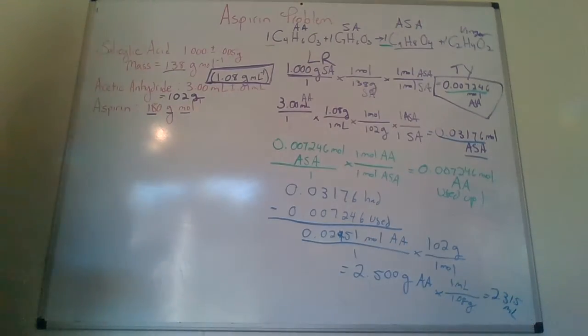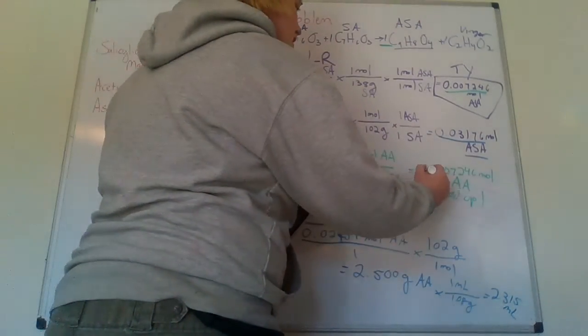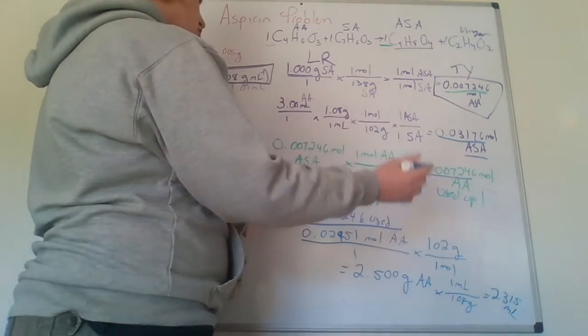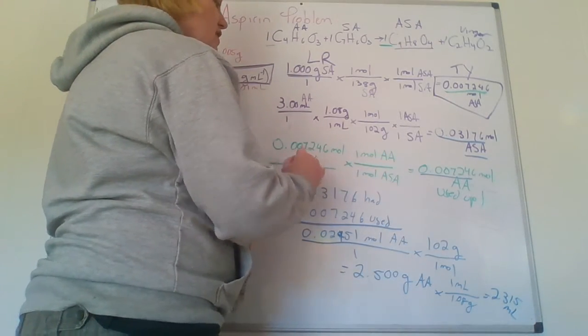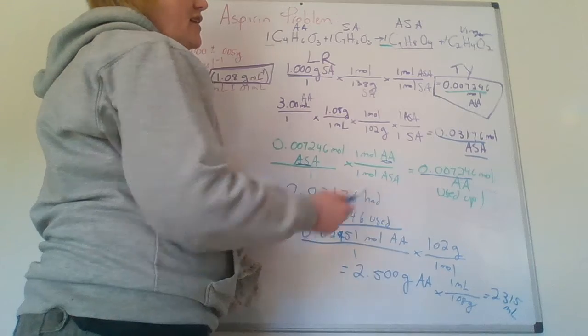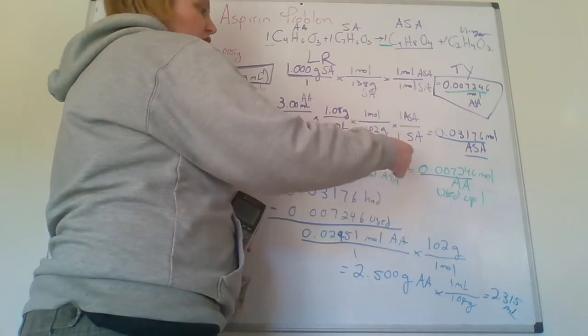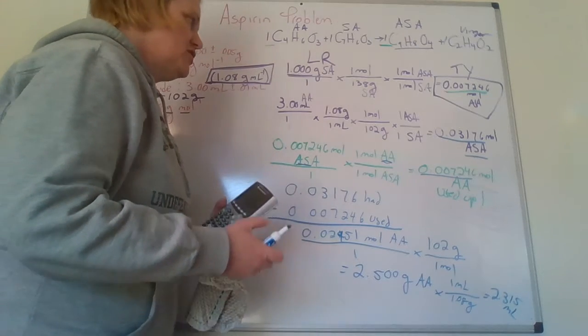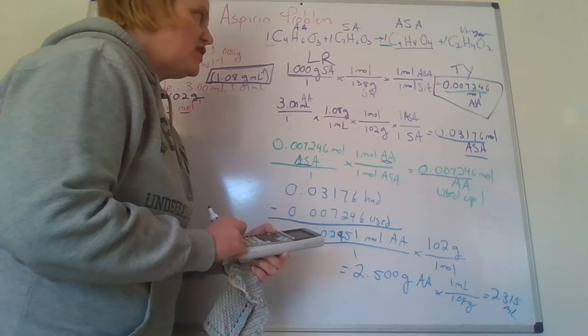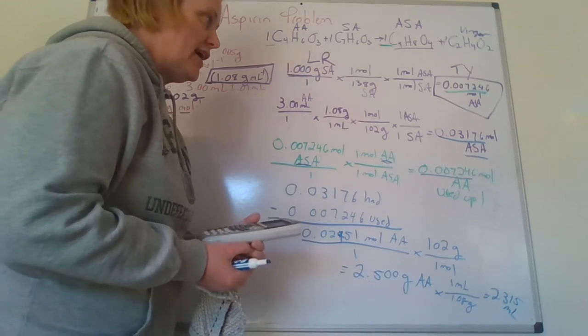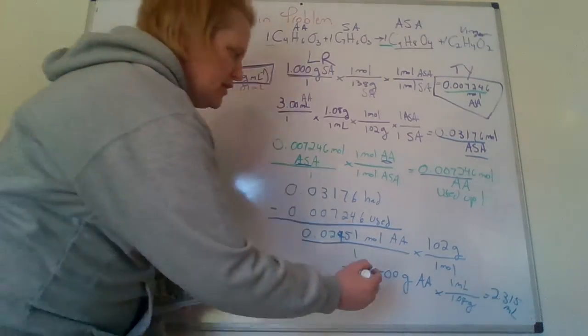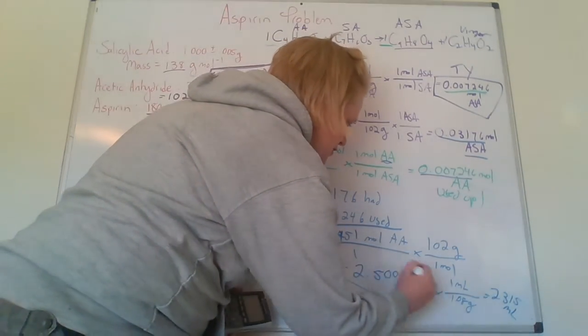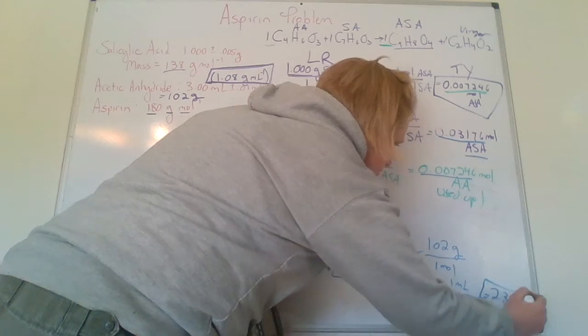So I took the moles that I ended up using up, converted that back to moles of the acetic anhydride that I would have used, subtracted what was left over, and changed it back to grams. So that would be you determining your excess reagent. I took either this answer or that answer. It doesn't matter which.